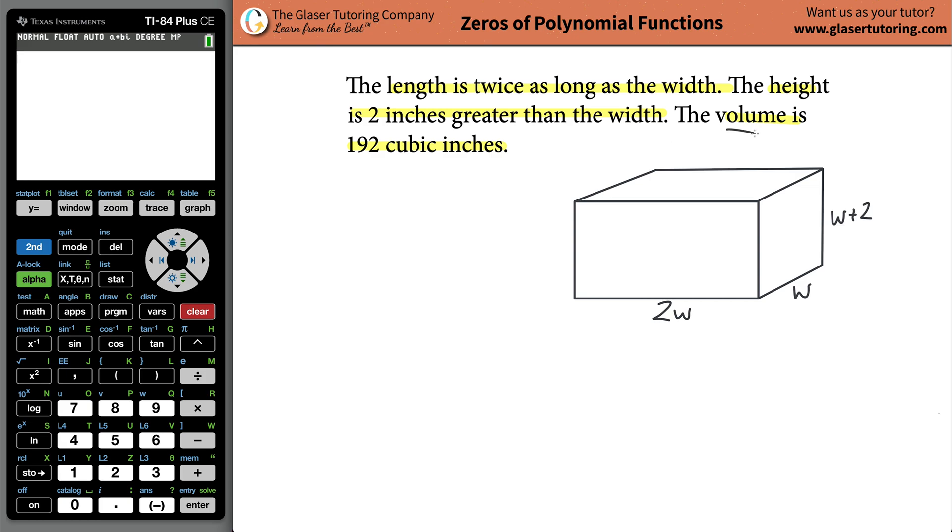It tells us the volume of the box is 192 cubic inches. You can write that the volume equals 192 inches cubed. I'm going to drop the units just so we can deal with the numbers. We need to know a relationship between the volume and the dimensions of the box. The volume of a box is equal to the length times the width times the height.